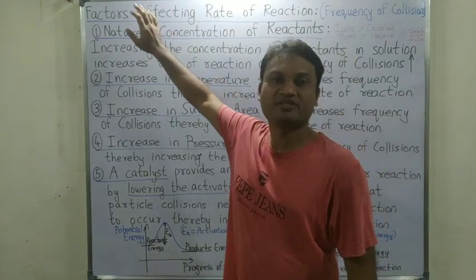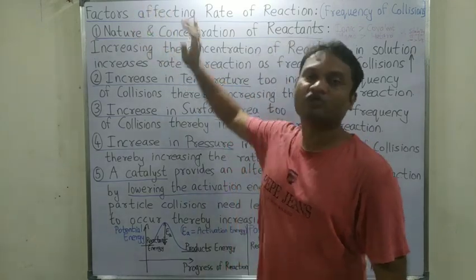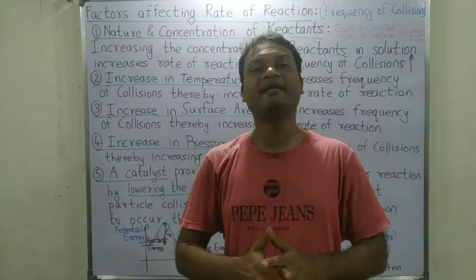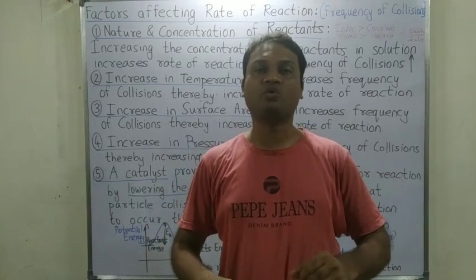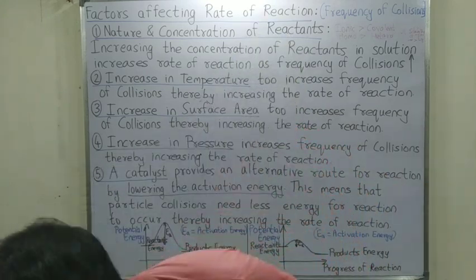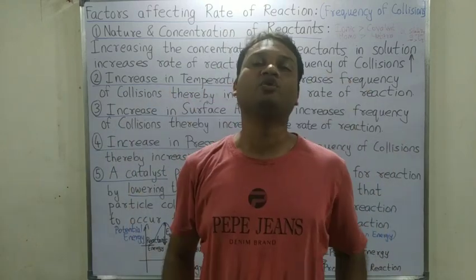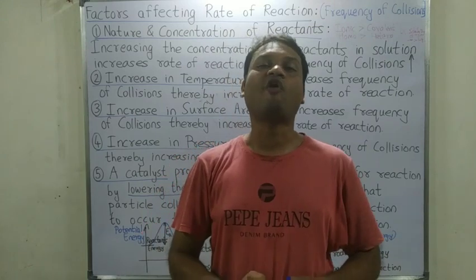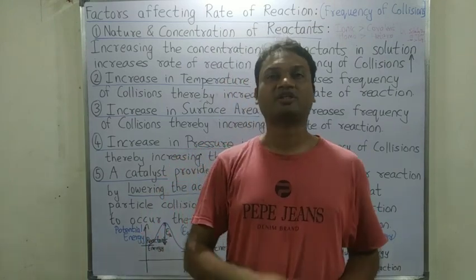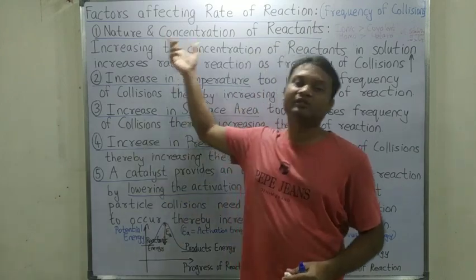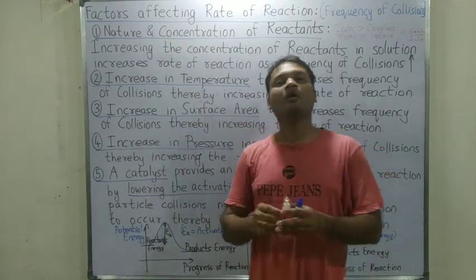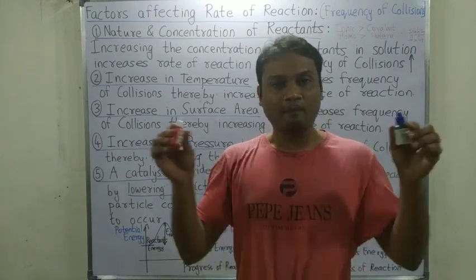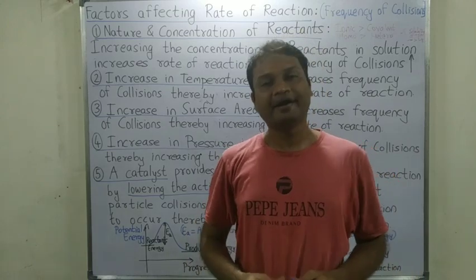The first factor we discuss is nature and concentration of reactants. If we take a higher concentration of reactants, there will be more reactants. More reactants means more colliding molecules. More the number of molecules colliding, more will be the product formed and more will be the rate of reaction. So more the concentration of reactants, more will be the collisions and faster will be the reaction — hence more the concentration, more the rate of reaction.